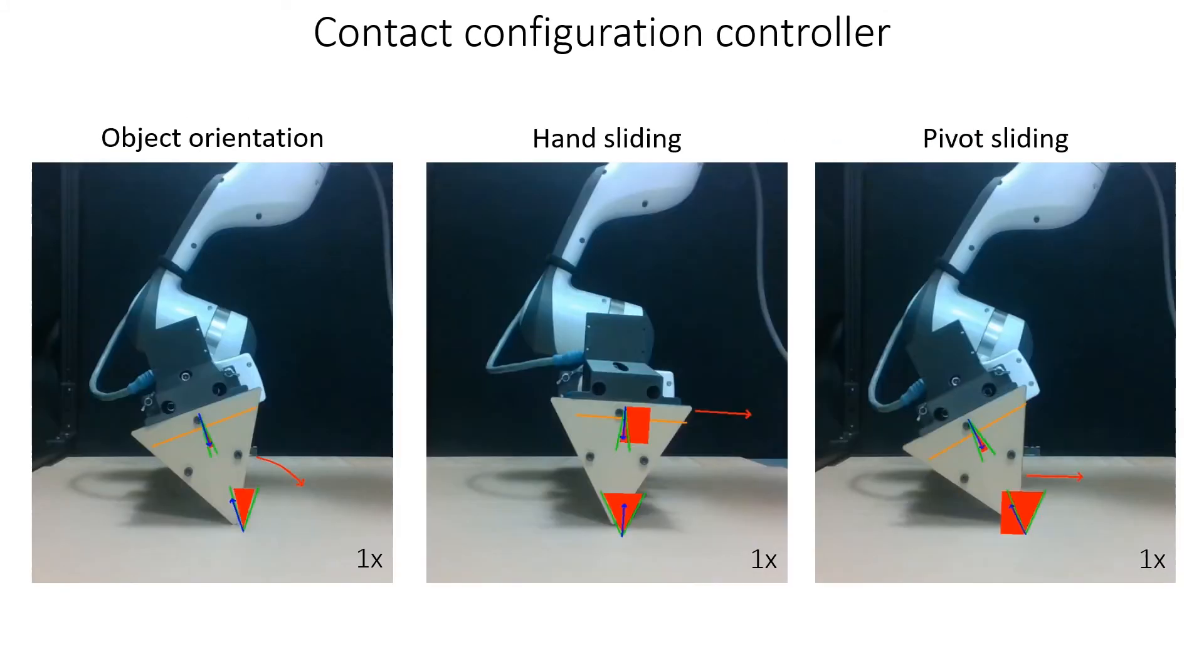The controller uses the most recent estimates to solve a quadratic program whose output is an impedance target for the end-effector, shown in orange. The QP regulates the object's pose and contact mode. Here we will see commanding object rotation, hand sliding, and pivot sliding.